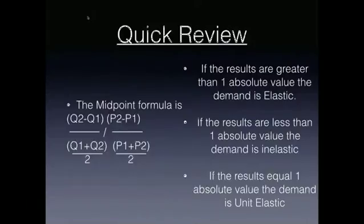The midpoint formula is: quantity 2 minus quantity 1, over quantity 1 plus quantity 2 divided by 2, and then the same thing with price — price 2 minus price 1, over price 1 plus price 2 divided by 2.